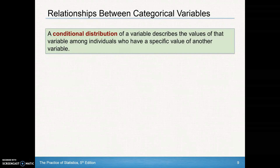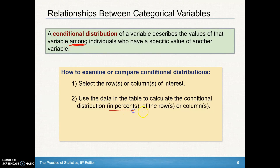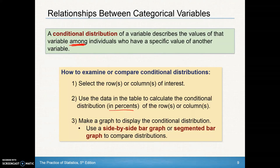We now look at conditional distributions. A conditional distribution of a variable describes the values of that variable among individuals who have a specific value of another variable. The key word is 'among.' To examine conditional distributions: select the row or column of interest, calculate the conditional distribution in percents, and make a graph — either a side-by-side bar graph or a segmented (stacked) bar graph.